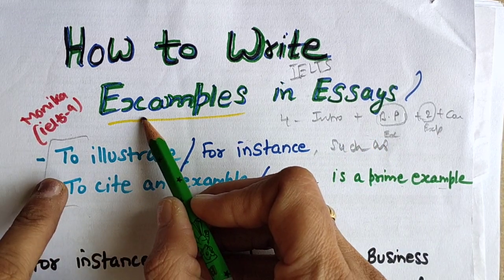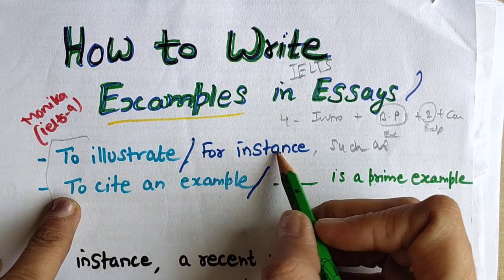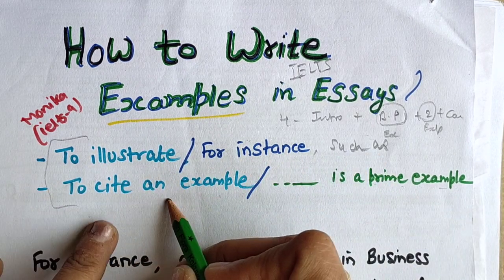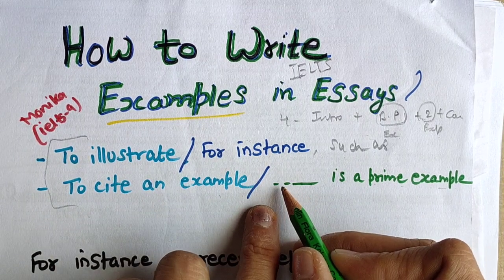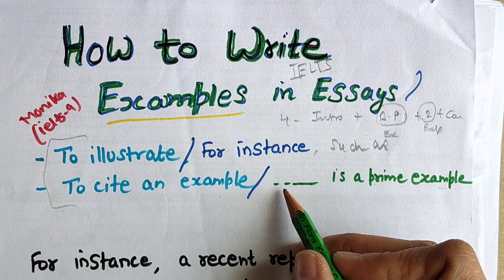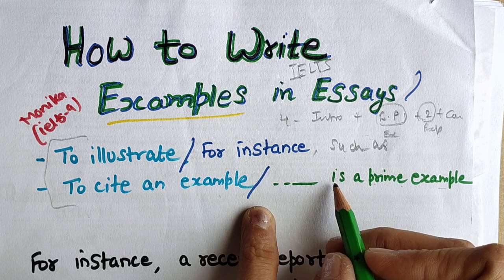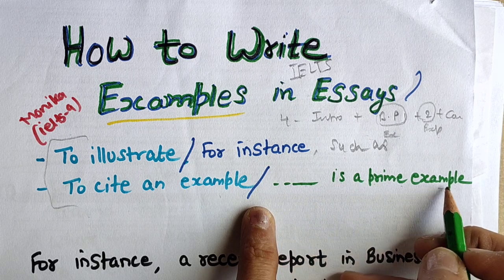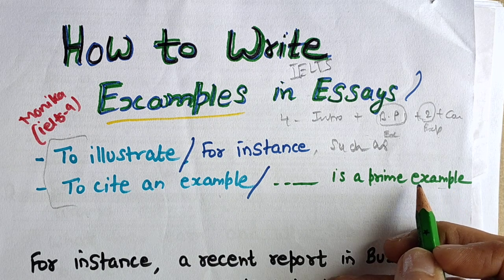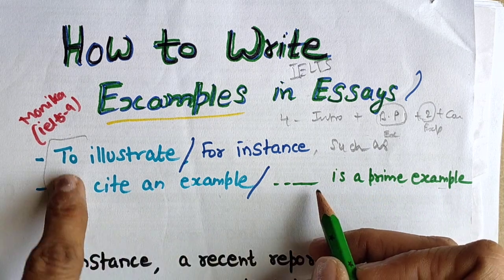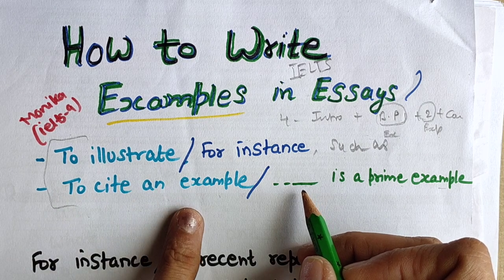Now, what other words can we use for examples? You can use: 'to illustrate,' 'for instance,' 'such as,' 'to cite an example.' Or, if you are giving the example of any person or personality, you can name that person and say they are 'a prime example of a famous personality in my nation.' You can pick any of these phrases and use them to start your example.